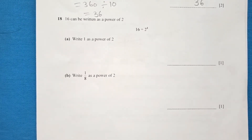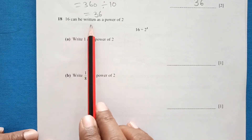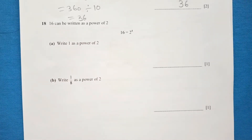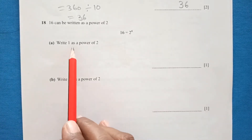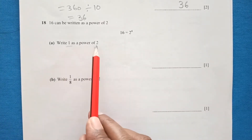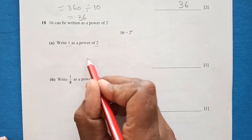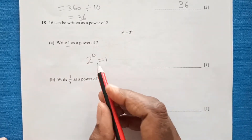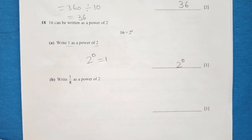Question 18. 16 can be written as a power of 2: 16 is 2 to the power 4. Write 1 as a power of 2. We know that anything raised to the power 0 is 1, so 1 can be written as 2 to the power 0.